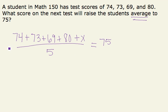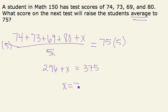I'll multiply both sides by five. And adding all of those numbers together, I get 296 plus x equals 375. Subtracting 296 over, I get x equals 79.